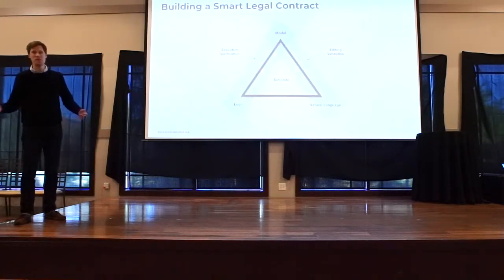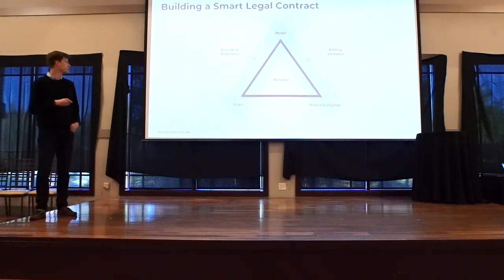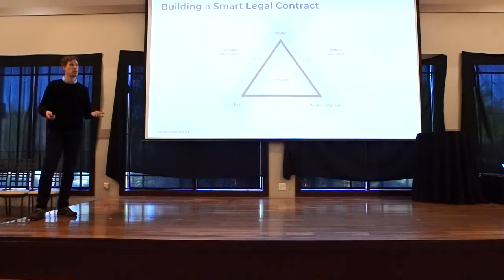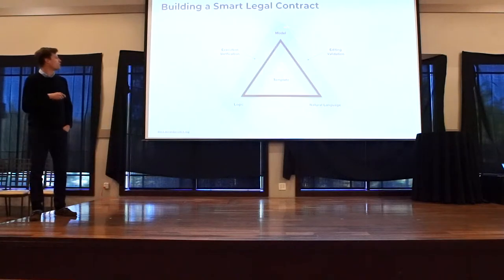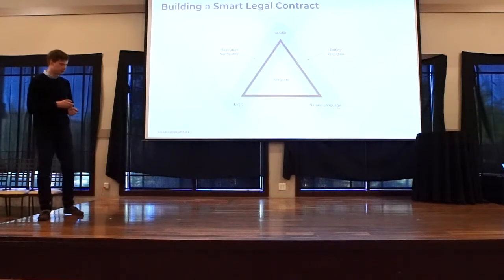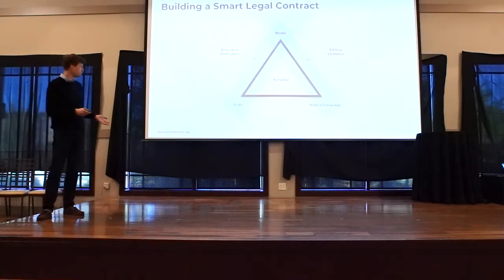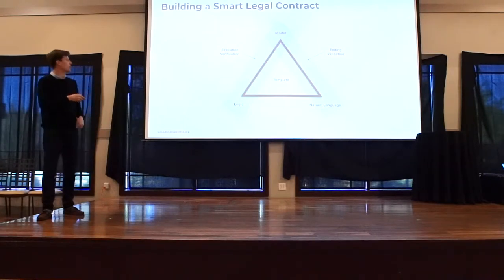In our view, a smart legal contract is a composite of three components: the natural language that we use today — legal prose that we can all understand or try to understand; a model — a data model that takes variables from the natural language and enables us to create a structured representation of the contract; and executable logic. The executable logic is what turns a legal contract into a smart legal contract. These three components interrelate and work together.